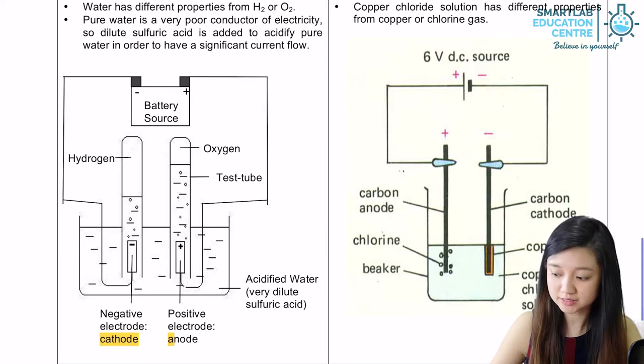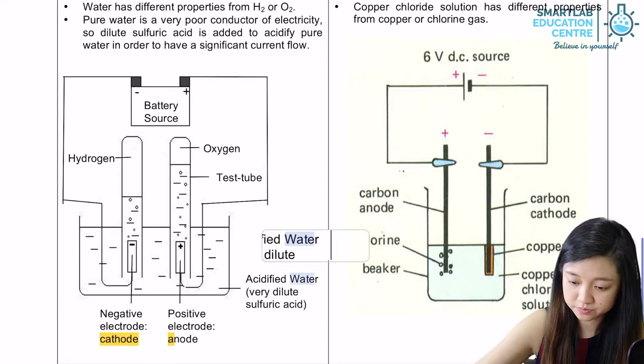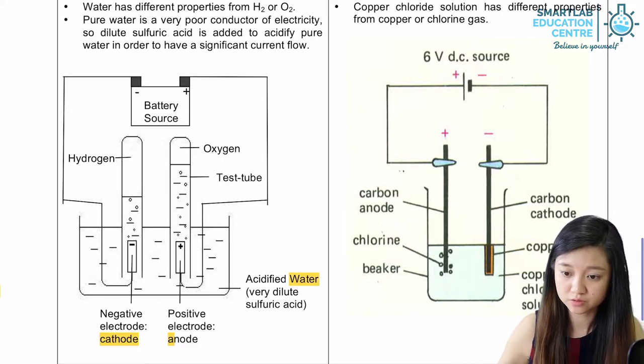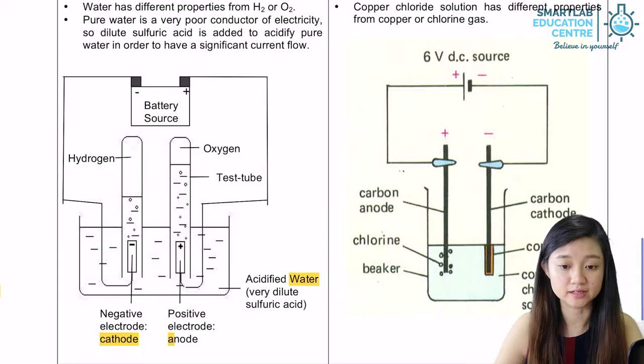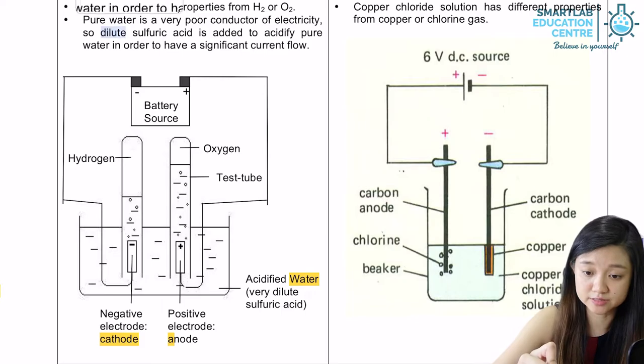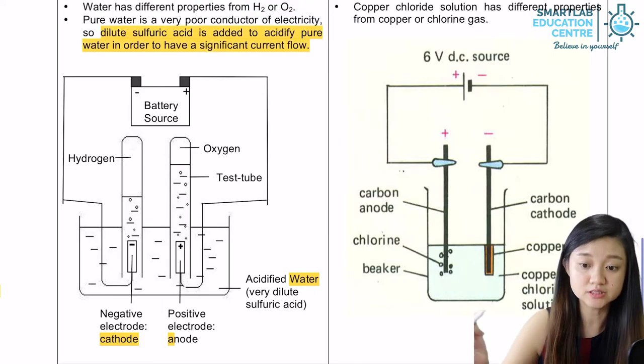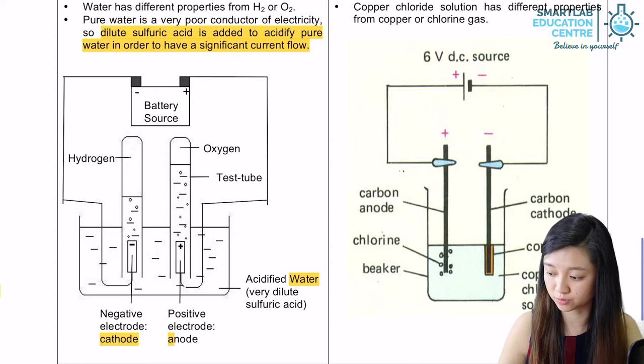In this case, the compound that we are going to break down is water. For water, we have to add a little bit of dilute sulfuric acid first in order to acidify the pure water to have a significant current flow.